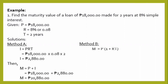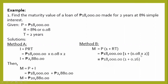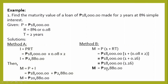For Method B, we use M equals P times the quantity 1 plus RT. Substituting: 18,000 times the quantity 1 plus 0.08 times 2. That gives 0.08 times 2 equals 0.16; then 1 plus 0.16 equals 1.16; and 1.16 times 18,000 gives a maturity value of 20,880 pesos. As you can see, Method A and Method B give the same answer.